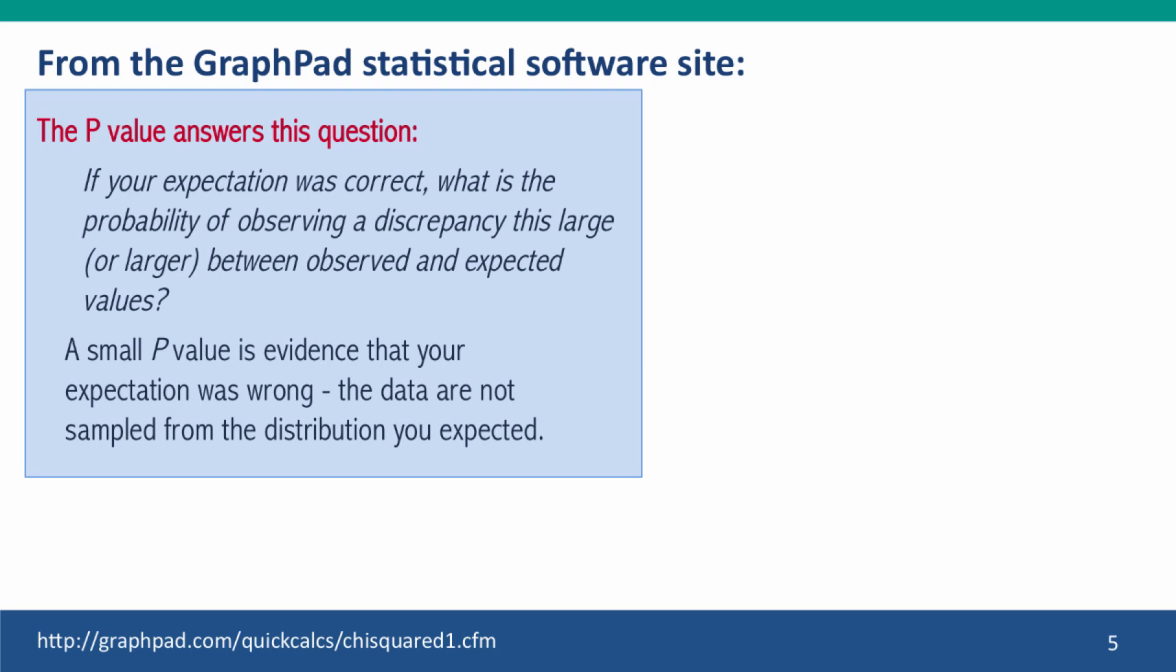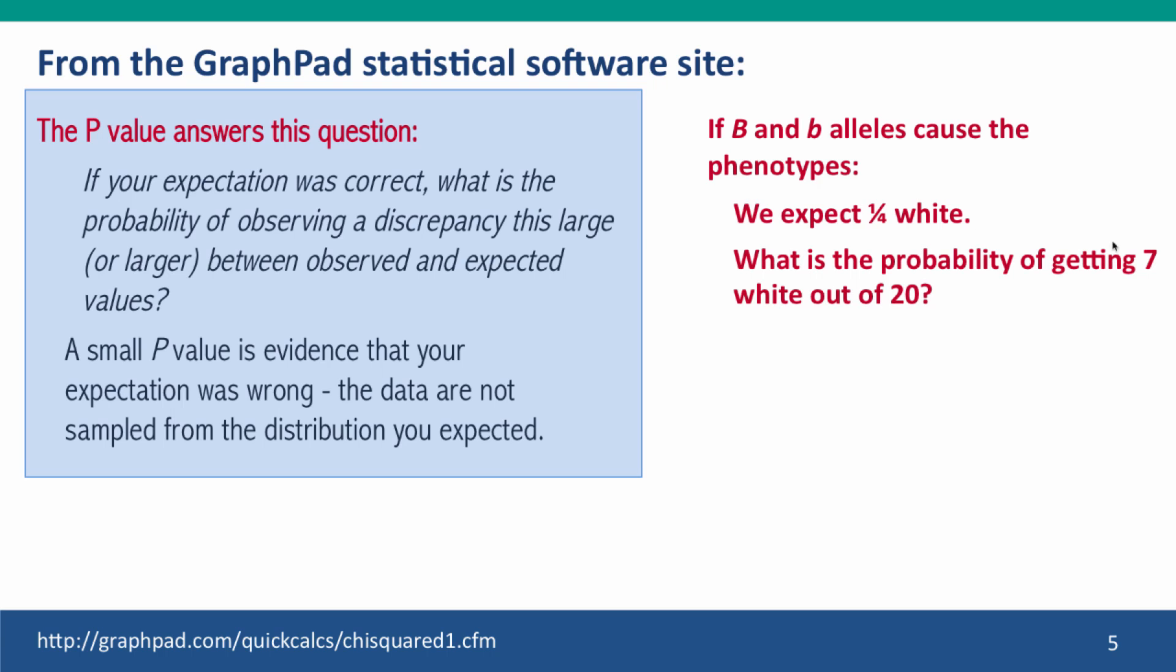And the best explanation for that that I've seen is on the GraphPad software site. So the p-value answers this question: If your expectation is correct, what's the probability of observing this large a discrepancy between your observed and expected values? So in this case, we can change it. If the big B and little b alleles in the parents cause the phenotypes of the F2, we expected a quarter white, what's the probability of getting 7 white out of 20?